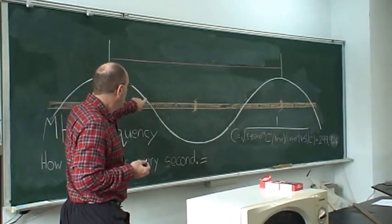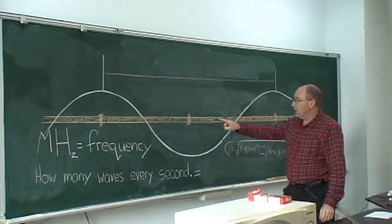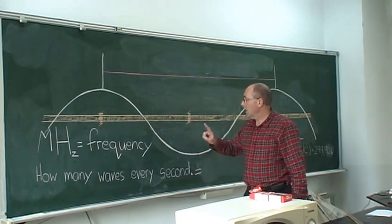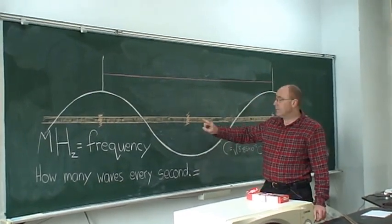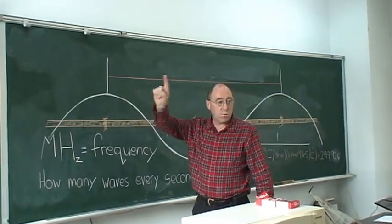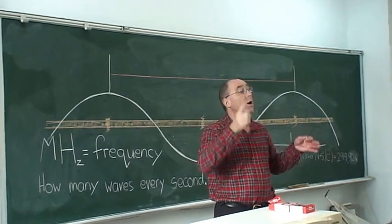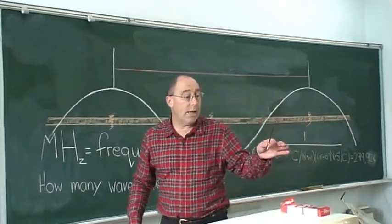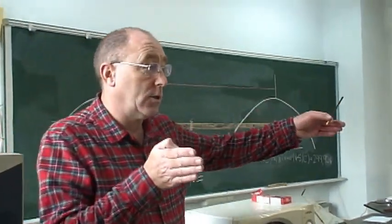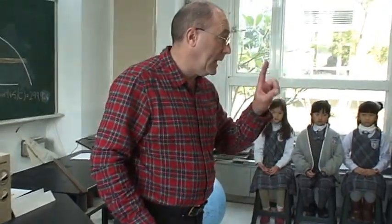If the waves move like this, and the chocolate is in the line here, the chocolate will melt here at the top, here at the bottom, and here at the top. Then I can use a ruler to measure from here to here — that's one wavelength. If I know one wavelength and how many waves every second, I know how far the light has gone in one second.